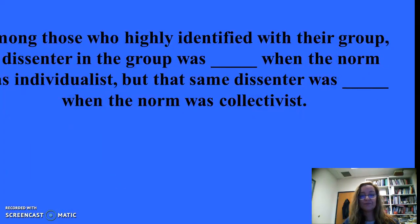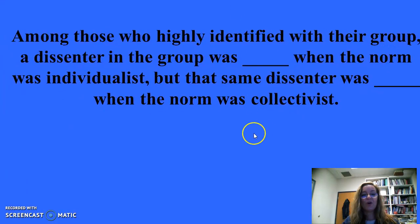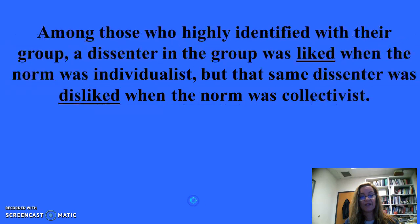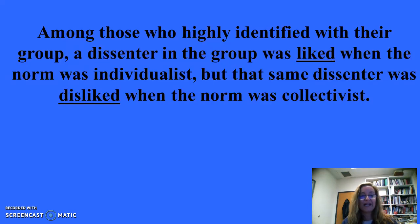For 400: Among those who highly identified with their group, a dissenter in the group was treated differently when the norm was individualist versus collectivist. Collectivism maintains harmony in the group, whereas with individualism, individual variability is expected and disagreement among members is tolerated.